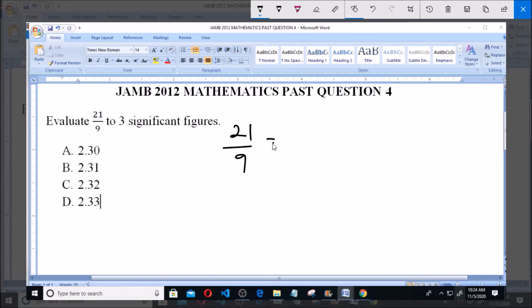21 divided by 9 is equals to 2 whole number 3 over 9, because 9 can only go into 21 two times, and 2 times 9 will give us 18. Now 21 minus 18 equals 3, so that is 3 over 9.